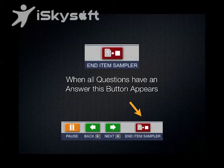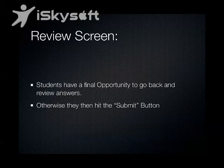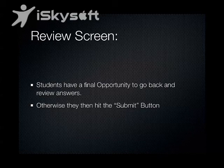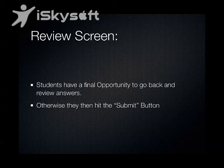When all the questions have been answered in the item sampler, a red button called 'End Item Sampler' will appear. Once you click on that, it's going to bring up a review screen for students. This review screen is the student's final opportunity to look at any of those flagged questions they've marked with checkboxes, and to go back and double-check answers. If they are all set, they hit the submit button — that is it. They have submitted their test and will not be able to go back and redo answers.